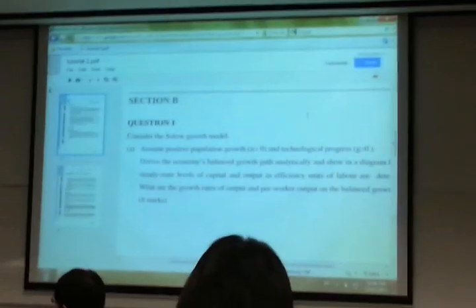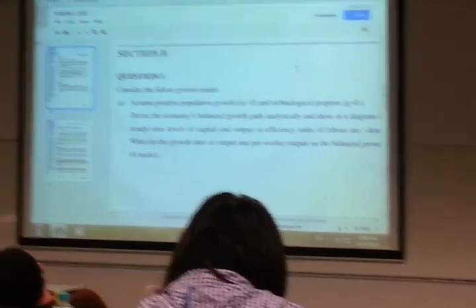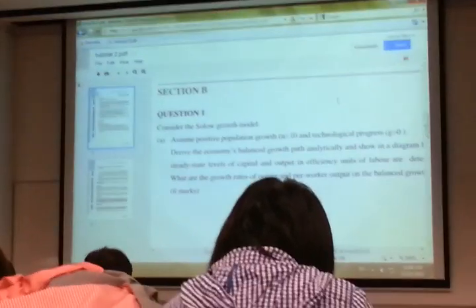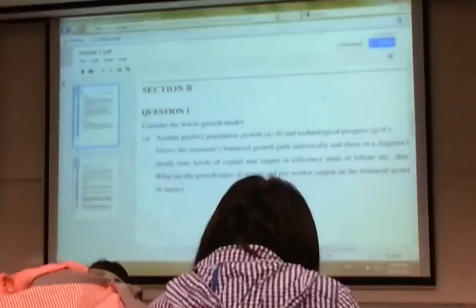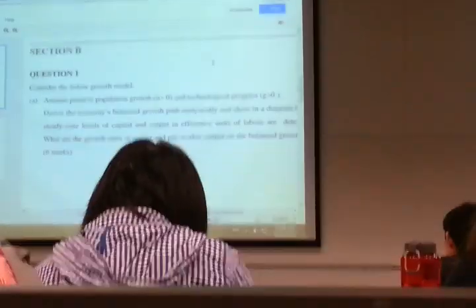Some students fret and think Section B is going to kill them, but actually it's not. Section B, every year, Part A and B is the same. Thirteen marks, and you can literally score 10 to 12 marks. Even if you make some careless mistake, you still pass the question. I'm not going to go through in detail.